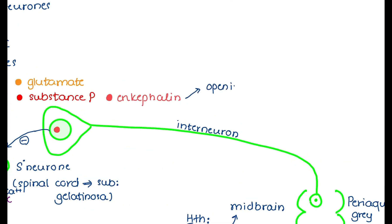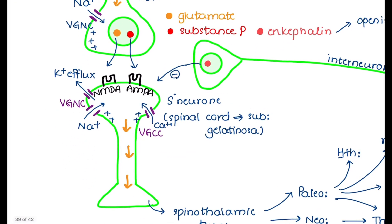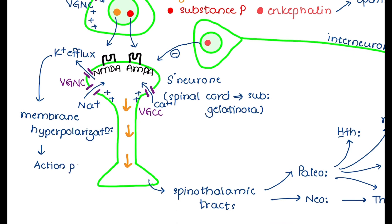Enkephalins also allow opening of potassium channels, causing potassium efflux. The loss of positively charged ions from the cell leads to intracellular hyperpolarization, which in turn inhibits action potential formation. So fewer pain signals are transmitted to the brain, and the pain is finally relieved. That is why endogenous opiates play a big role in the body's pain-relieving mechanisms.